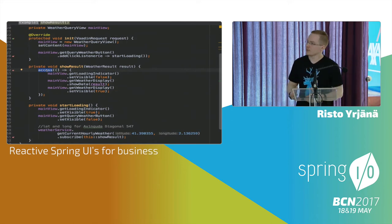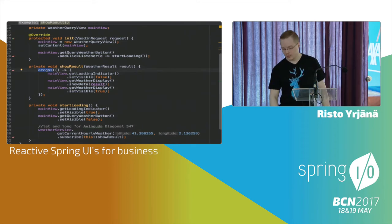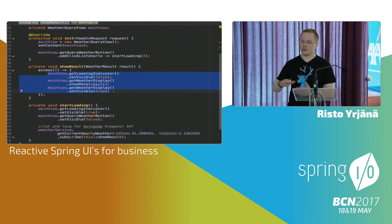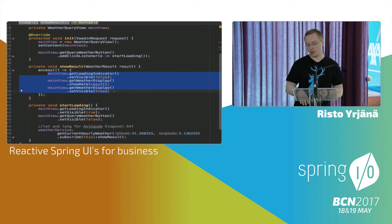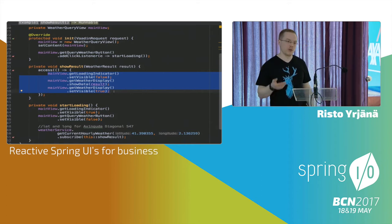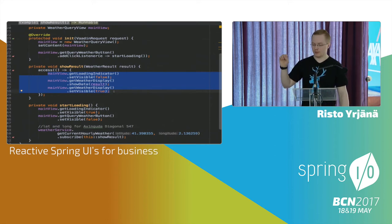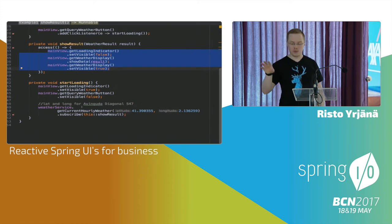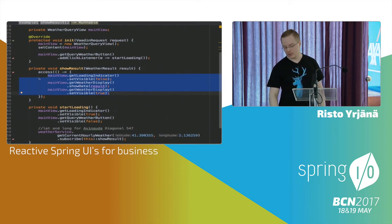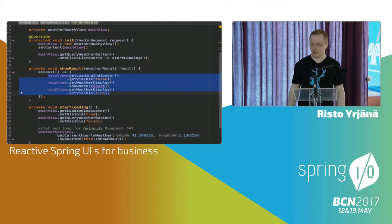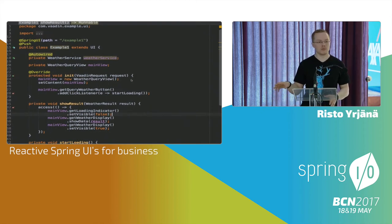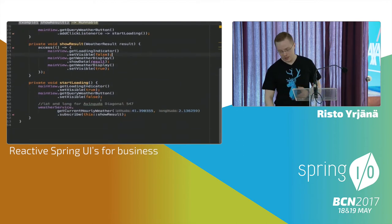The interesting thing here is the access call — that's a Vaadin term. Whenever you wrap something inside access, it guarantees two things: one, that you can freely modify the UI from a background thread; and two, after the access block finishes, Vaadin will push those changes to the client browser. So when the weather service returns from some other thread, access guarantees we can modify the UI and those changes are then updated.